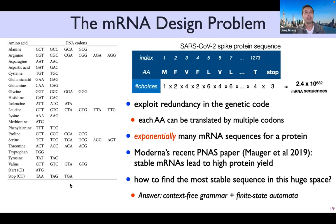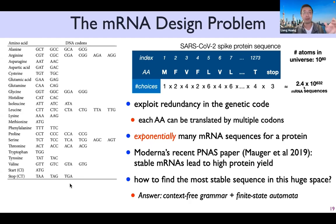Here is the mRNA design problem in a mathematical setting. We want to design mRNA sequences that can translate to the spike protein, which has over 1,000 amino acids. Each amino acid can be translated by multiple DNA or RNA triplet codons because the genetic code is redundant — for example, valine has four choices, serine has six. If you multiply all of them together, you get a humongous number: 2.4 × 10^(~600) mRNA sequences, all valid candidates. This number is much higher than the number of atoms in the universe. So we want to find the best sequence — according to Moderna's paper, the most thermodynamically stable, lowest-energy one — from this huge ocean of candidates.